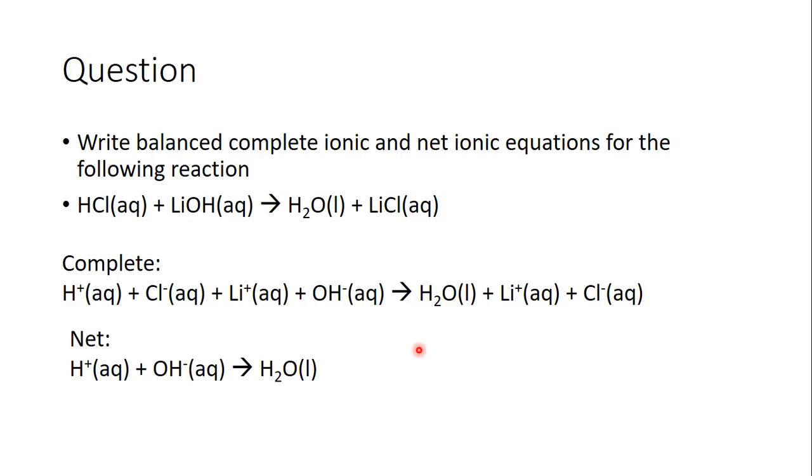And then we have to cross out things that are the same. So chloride happens in both parts of the equation. Lithium happens in both parts of the equation. When we cancel that out, we're left with H+ plus OH- makes H2O. That's our net equation.